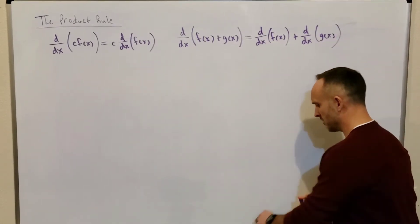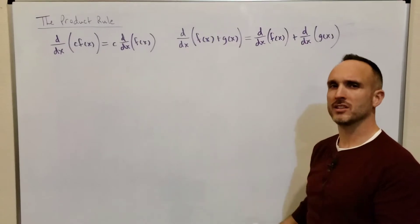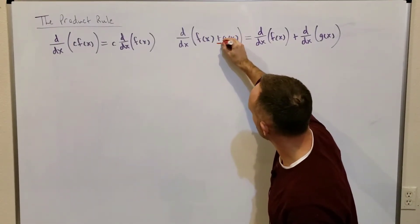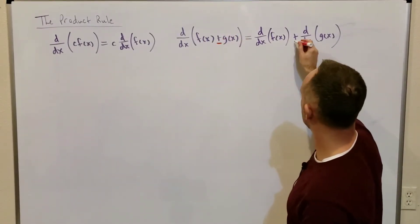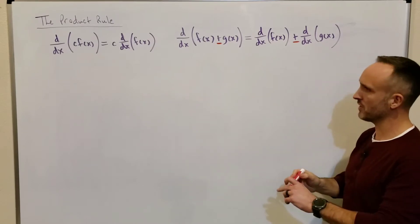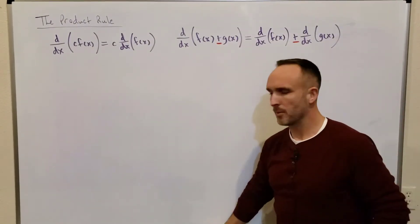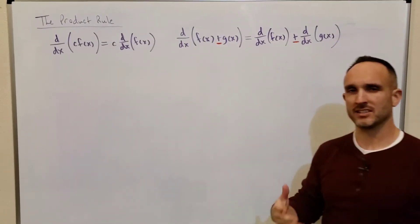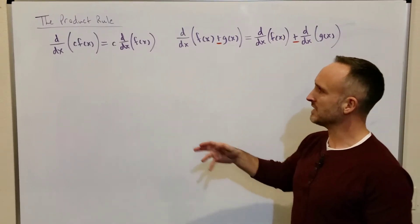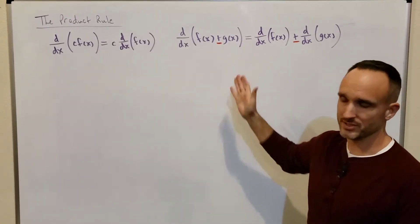There's nothing terribly unique about a sum here — you could also have a difference, so subtraction here would mean subtraction there. These derivative properties are pretty easy to use. Derivatives play nicely with constant multiples and sums and differences.